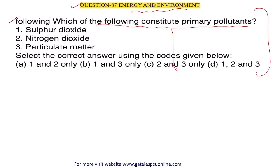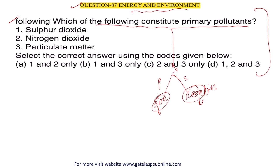Pollutants are basically sources of pollution. There are two types: primary and secondary. Primary pollutants are direct sources. Secondary pollutants are formed after some chemical reaction. For example, primary pollutants include gases produced when burning coal, such as CO₂, carbon monoxide, and SO₂.